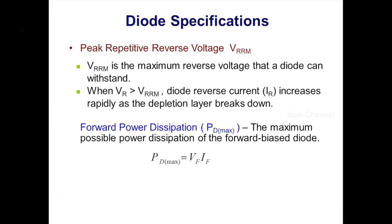The next is forward power dissipation. The actual power dissipation is calculated by multiplying the forward voltage and the forward current. This must be less than the maximum power dissipation rating of the diode. Exceeding the maximum value will result in catastrophic effects. Excessive forward current and excessive reverse breakdown voltage are the most common causes of diode failure.